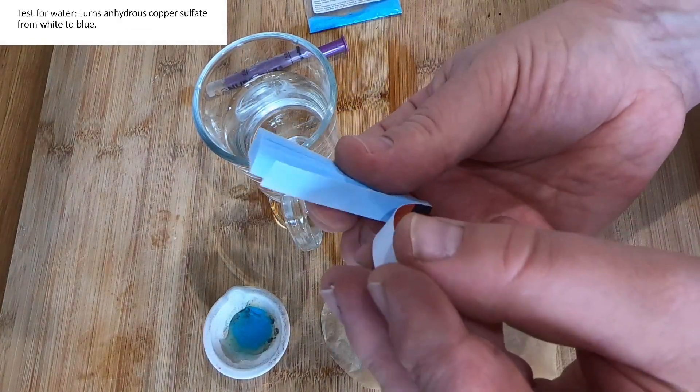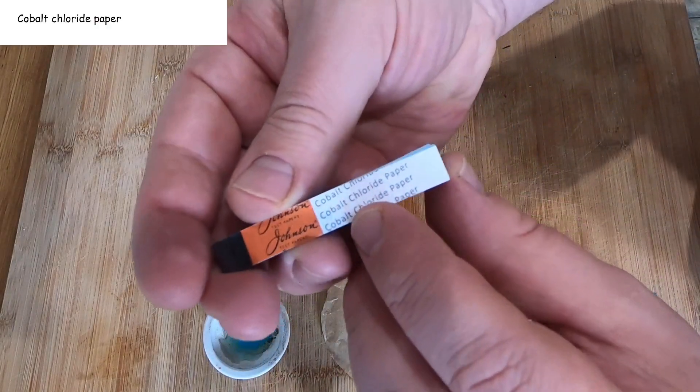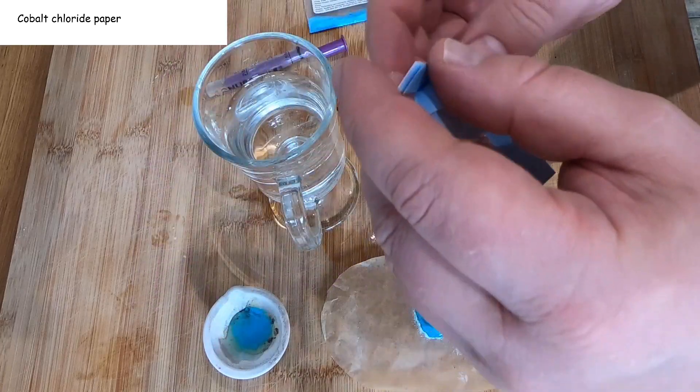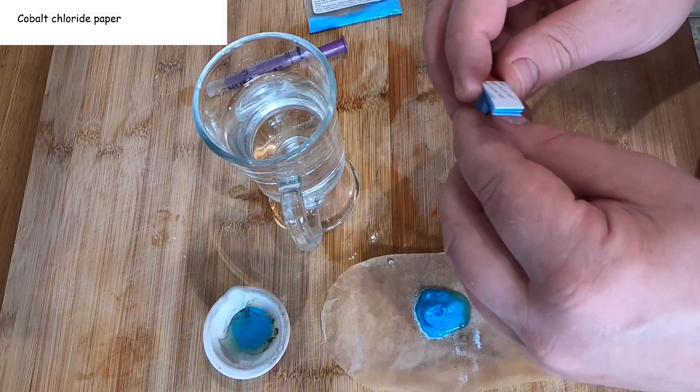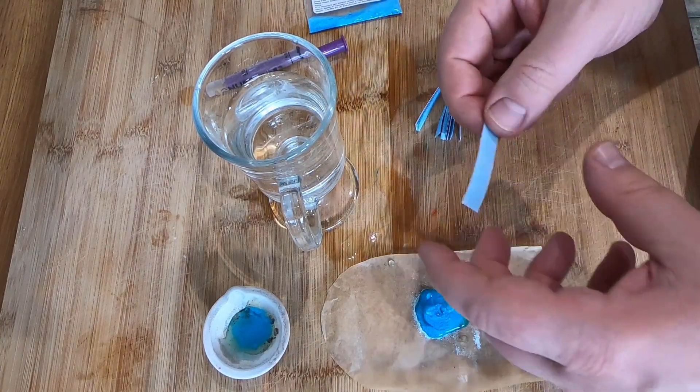So another test for water is to take this, which is cobalt chloride paper, as you can see here, and it's blue in color. I can make it bluer if I put it in the oven and evaporate any moisture from the paper.